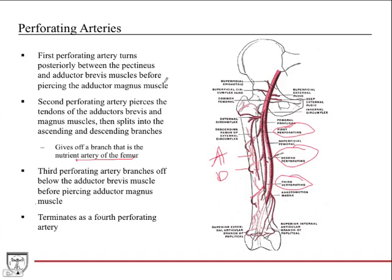The third perforating artery branches off below the adductor brevis muscle just before piercing the adductor magnus. These muscle landmarks are more helpful for identifying structures in the cadaver lab than for board exams. Importantly, the profunda femoris artery terminates as the fourth perforating artery — it gives off the first, second, and third perforating arteries, and then terminates as the fourth.